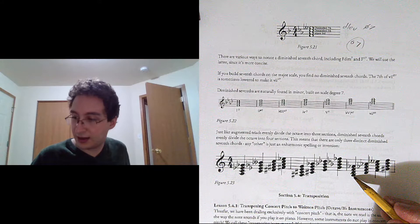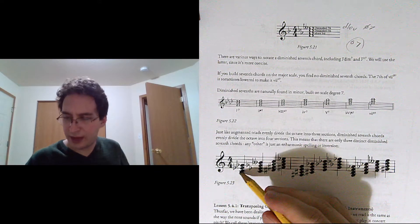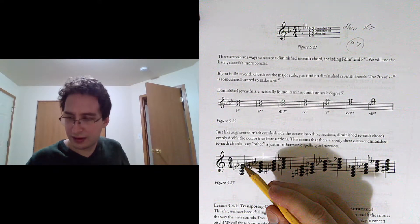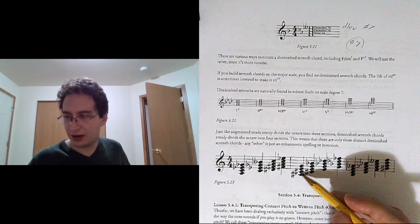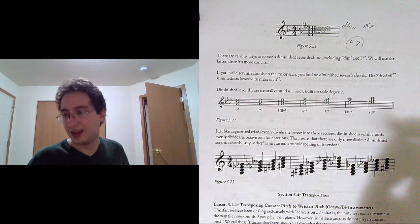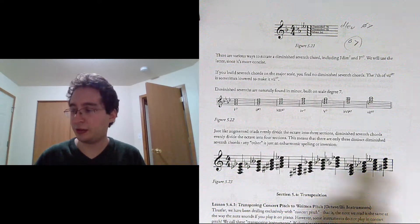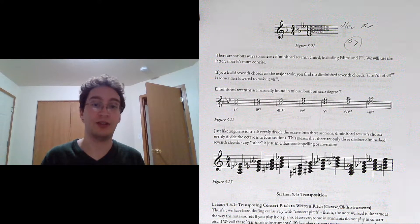You have one that's built on A sharp or B flat. You have one that's built on B. Then I go to build one on C, and oh wait—it's the same notes. Go to build one on C sharp. Oh wait—it's the same notes! So there are only three distinct diminished 7th chords.